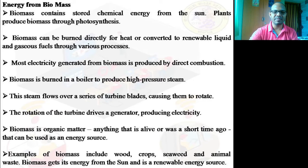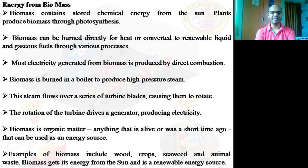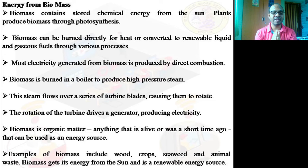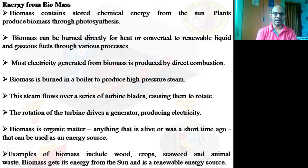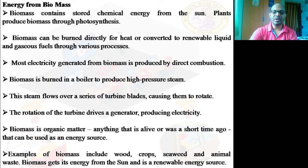Examples of biomass include crop waste, cow dung — which is dried into cakes and burned — sticks, sawdust, and any plant material. Anything from plants can be used for burning. The only requirement is that it should be dry — that is all.